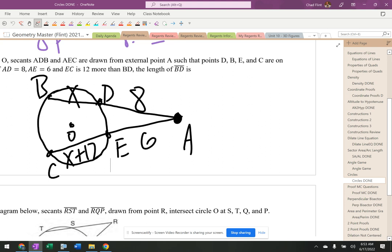Find the length of BD. So now here's the problem. This is outside times whole equals outside times whole. So I can't do 8 times X, 6 times X plus 12. I can't do that. I have to do 8 times the whole thing, which is 8 plus X.